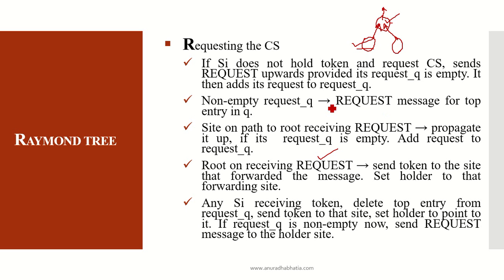Any SI receiving the token deletes the top entry from the request queue and sends the token to the site. As requests are added to the queue, when the token is released the first node that asked for it receives the token. The holder is set to point to it. If the request queue is not empty, it sends a request message to the holder site, meaning it keeps holding until the root which has the token releases it. This is the procedure for requesting the critical state.